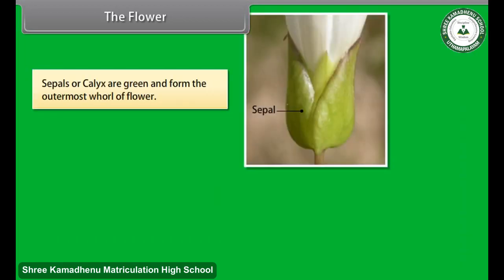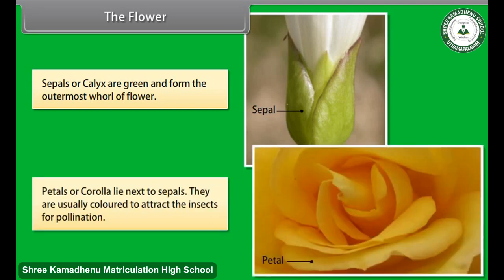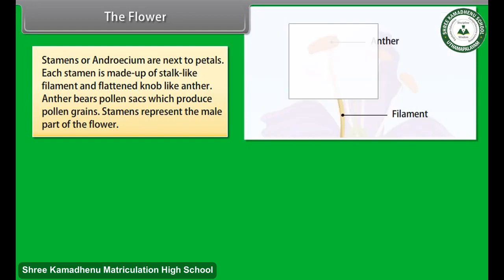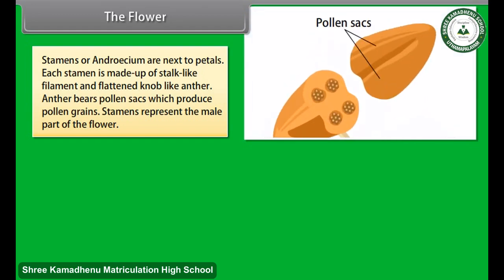Sepals, or calyx, are green and form the outermost whorl of the flower. Petals, or corolla, lie next to sepals and are usually colored to attract insects for pollination. Stamens, or androecium, are next to petals. Each stamen is made up of a stalk-like filament and a flattened knob-like anther. The anther bears pollen sacs which produce pollen grains. Stamens represent the male part of the flower.